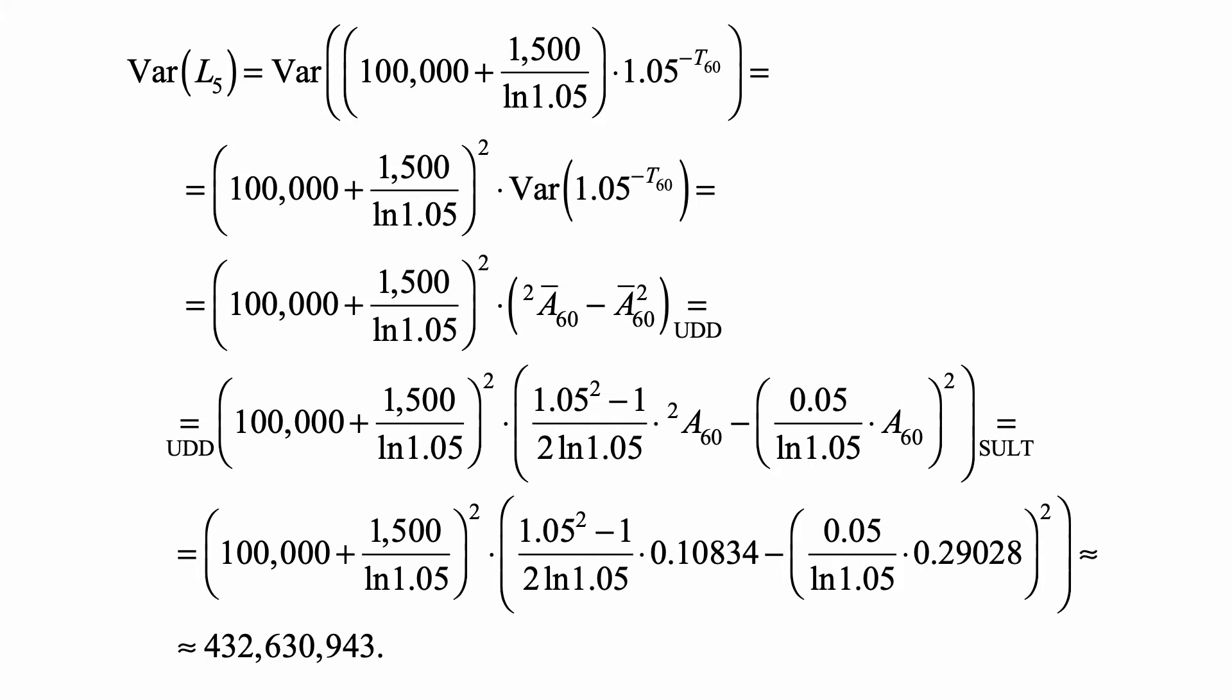We write that standard formula for the second term and then square it. Then we plug in the numbers from the table: ²A₆₀ is 0.10834, and A₆₀ is 0.29028. When we do the calculation, we get 432,630,943.